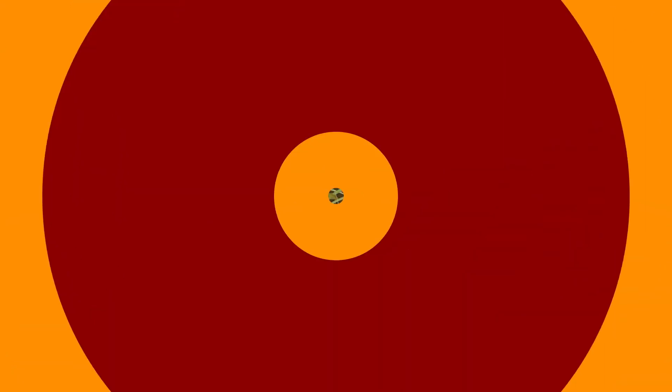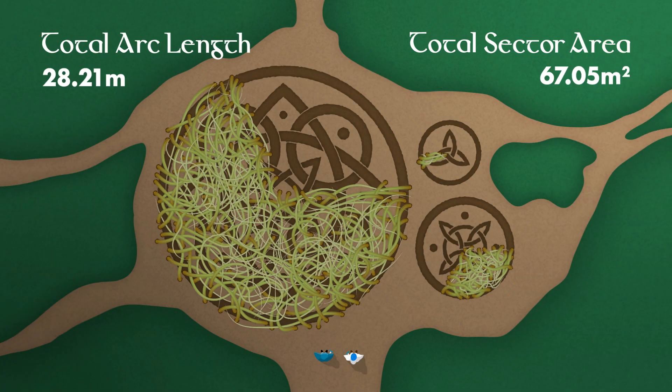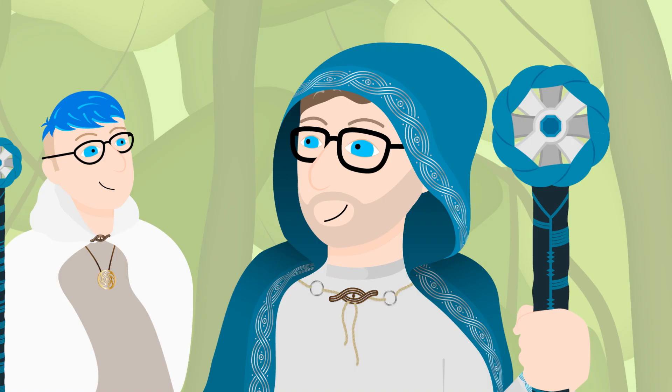Brilliant! It looks like we've got everything we need to clear away the vines and let the emblems summon the Wills of the Wisp. This is going to be incredible! Let's do it, Chris!